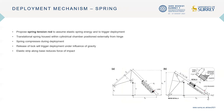We propose a spring tension rod to both absorb elastic spring energy and to trigger the deployment itself. This consists of a translational spring housed within a cylindrical chamber placed externally from the hinge, as shown in the diagram. The spring compresses during deployment under the influence of gravity. This rod can also be used to restore the deployed umbrella to its original upright position after a storm has passed. In addition, an elastic bearing strip can be placed along the base of the umbrellas to further reduce the force of impact as the umbrella completes its transition from the upright to the deployed configuration.